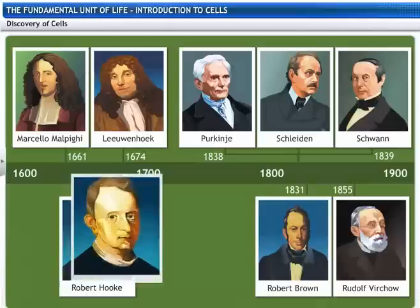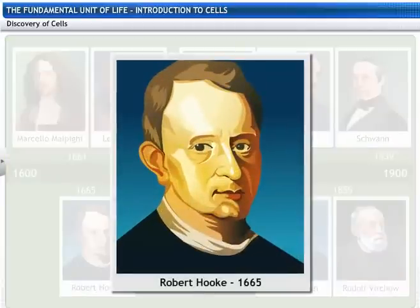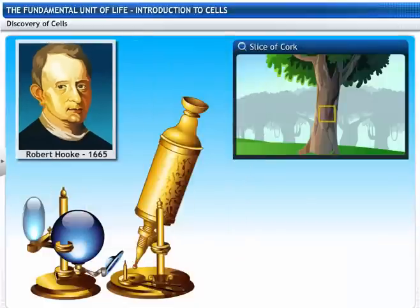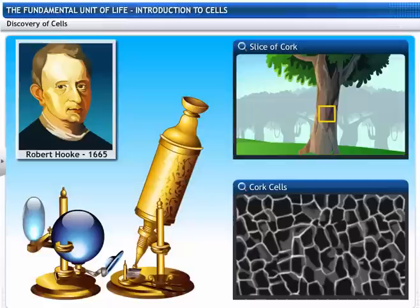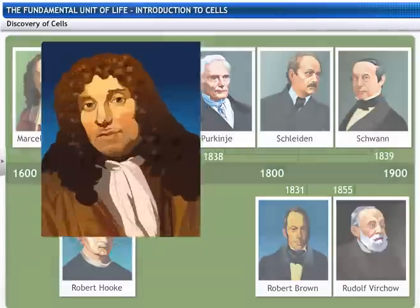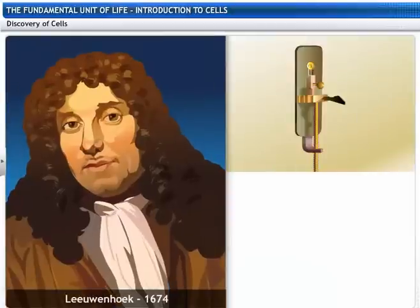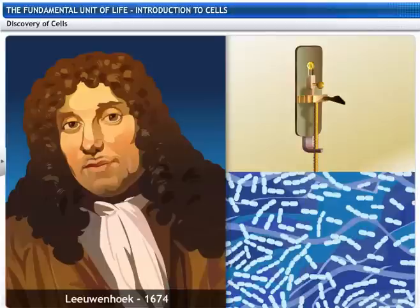In 1665, Robert Hooke, an English scientist, looked at a thin slice of cork through a compound microscope. He observed many tiny, hollow, room-like structures that resembled a honeycomb and called them cells. Hooke actually saw only the outer cell walls because cork cells are not alive. Leeuwenhoek, in 1674, with the improved microscope, discovered free-living cells in pond water for the first time.